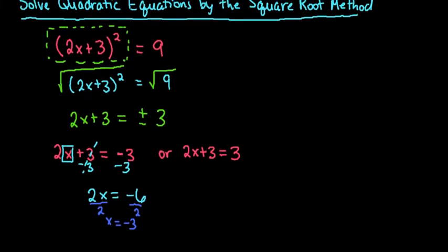For the second solution, we would subtract the three, doing the exact same thing. This time we get 2x equals zero, and when I divide zero by anything, it ends up giving me zero, so x equals zero.